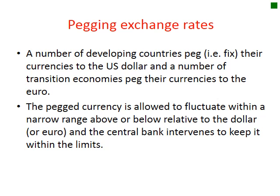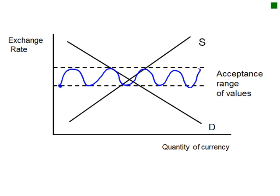Regarding pegging exchange rates: a number of developing countries peg their currencies to the US dollar, and a number of transition economies peg to the euro. The pegged currency is allowed to fluctuate within a narrow range above or below the reference currency, and the central bank intervenes to keep it within those limits. The currency is allowed to fluctuate within this band, and the country is satisfied as long as it stays within range.